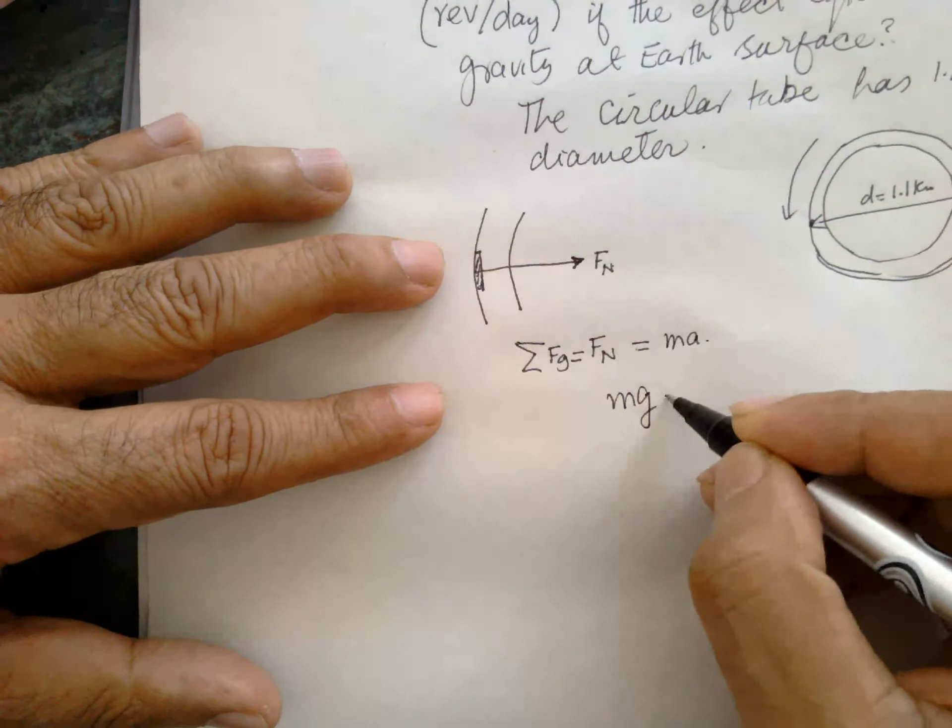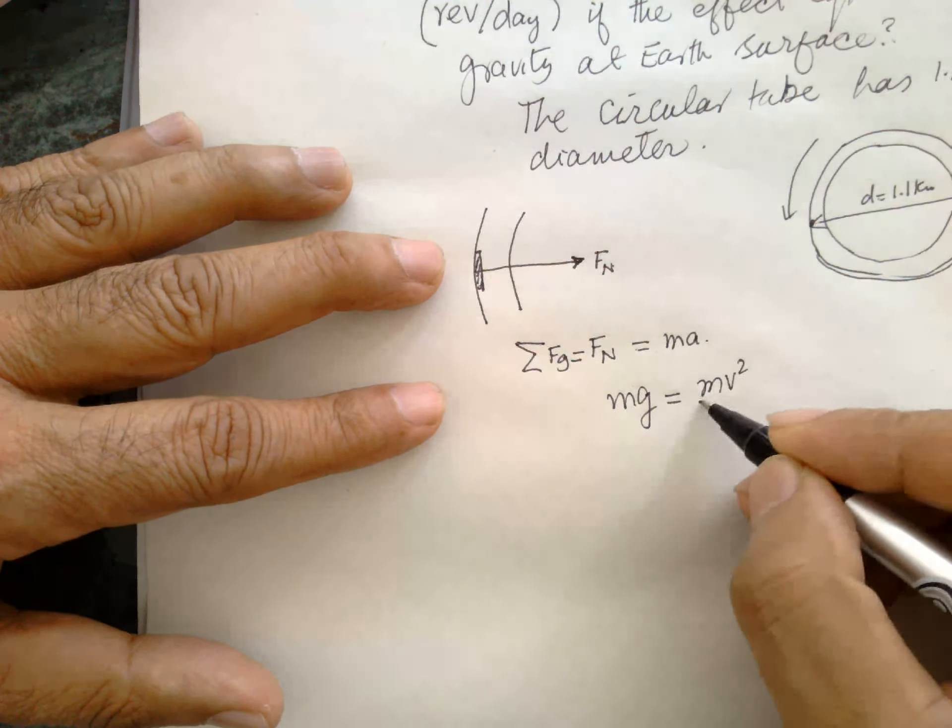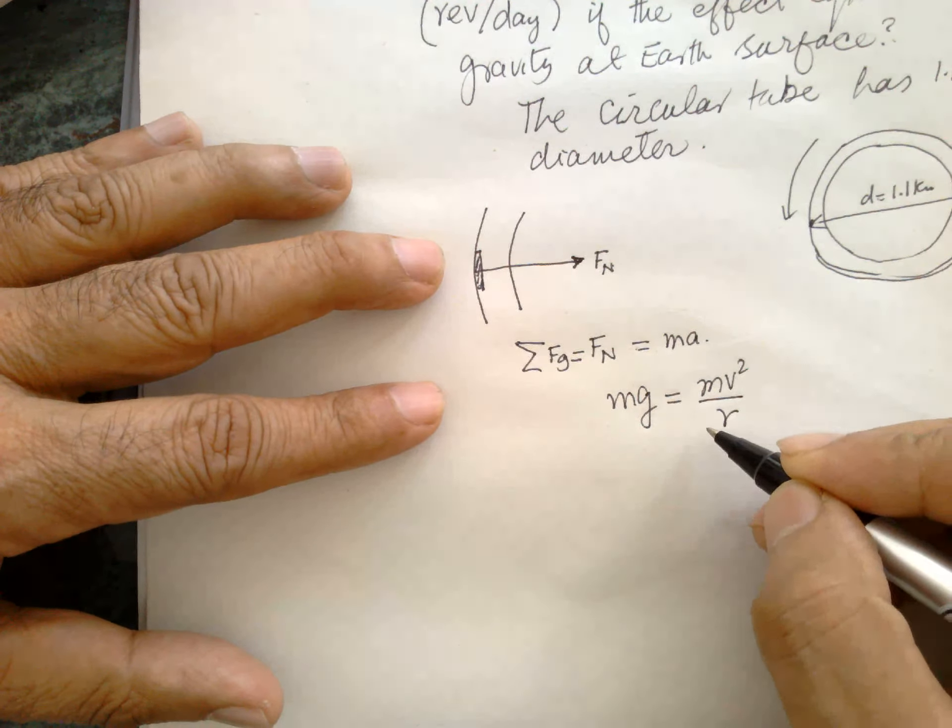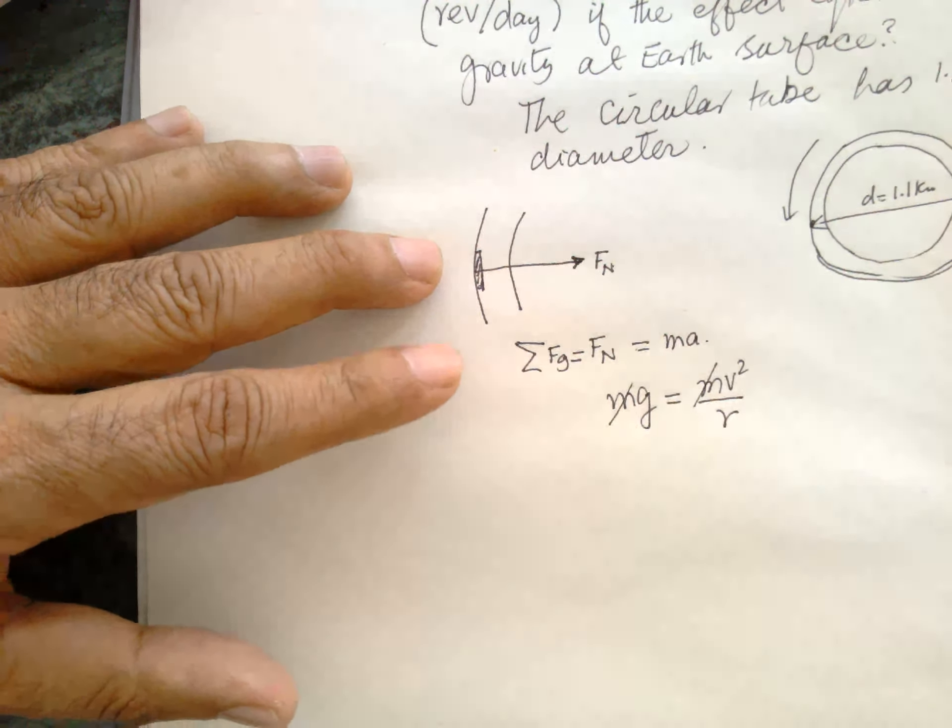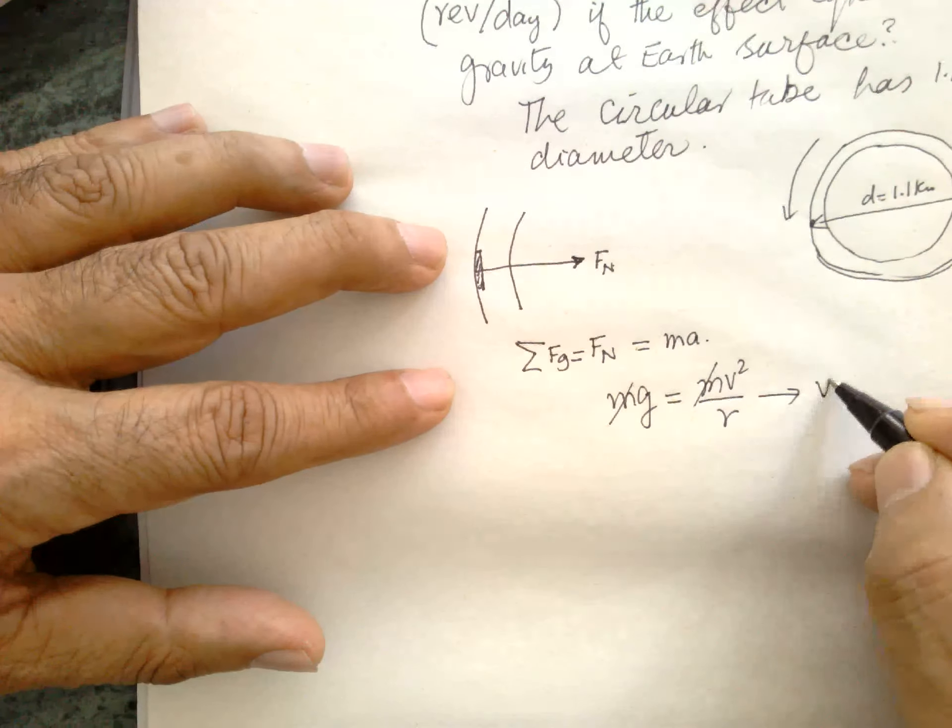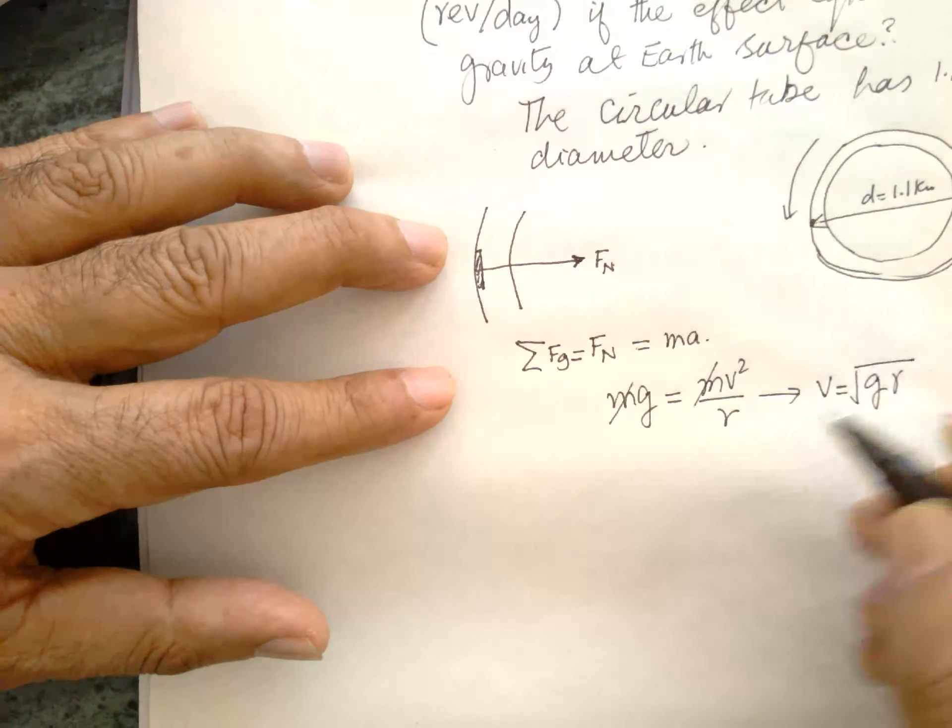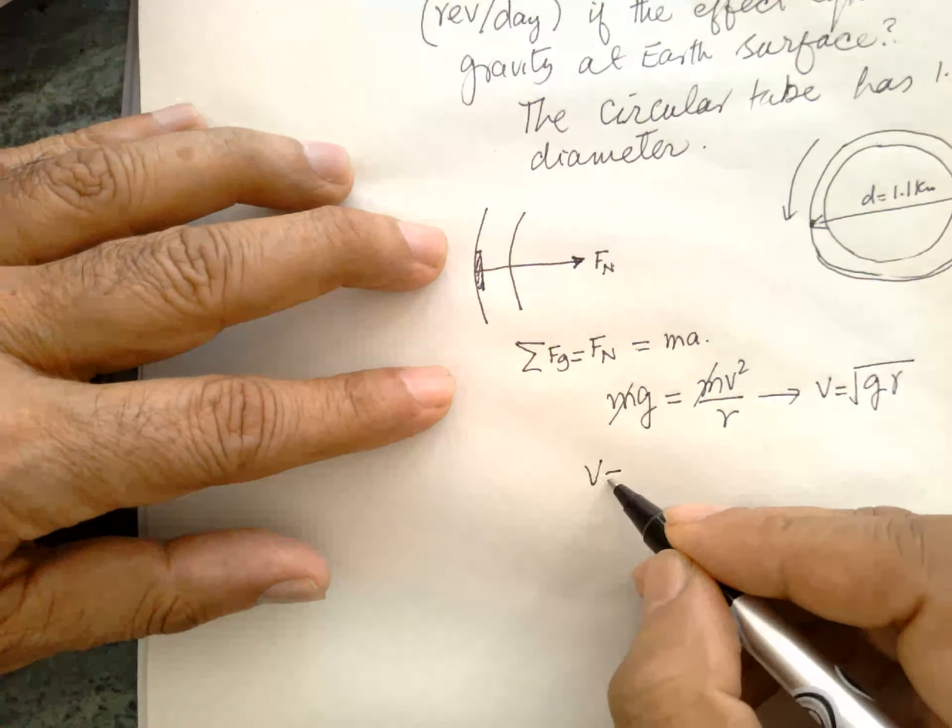MG which is equal to centripetal force MV² over R. So then we have to find V is equal to square root of GR. So the velocity of this tube should be this.